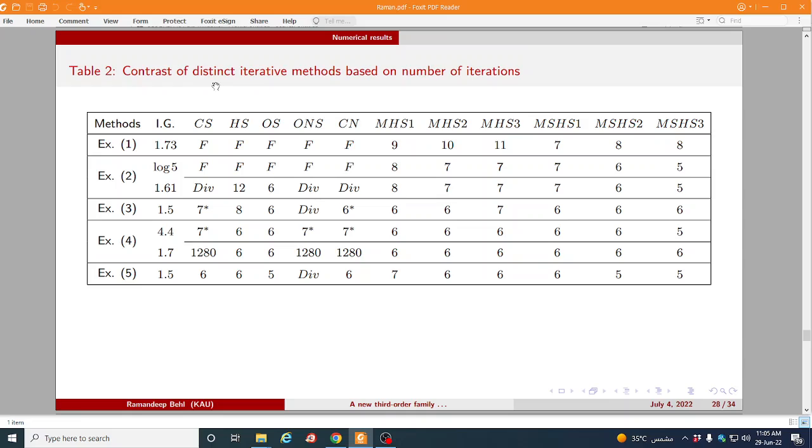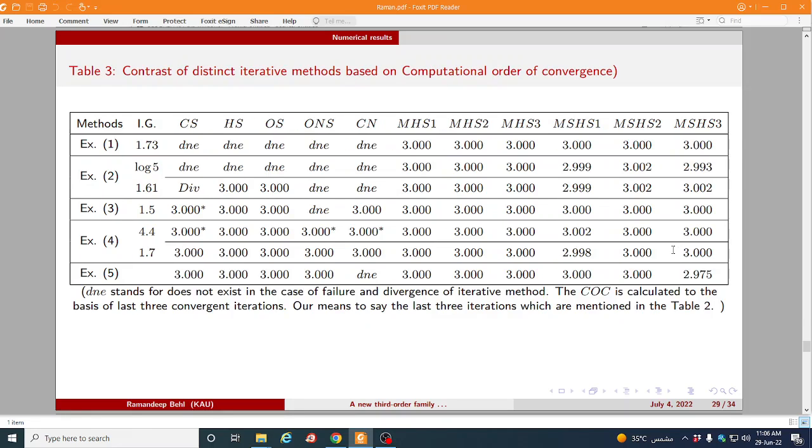So here we compare the iterative method based on number of iterations. Here are the initial guesses. As you can see that our method also taking very few small iterations as comparative to the existing. Look at here 1280, 666 iterations. So here the computational order for convergence you can see that our method also shows the stable computational order of convergence here.